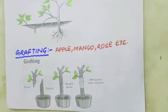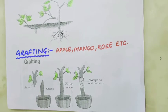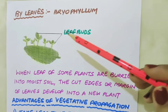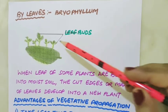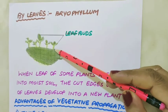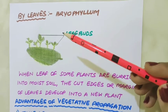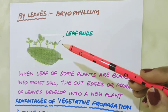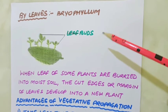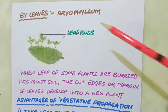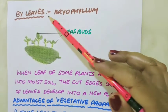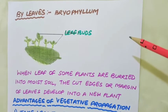Vegetative propagation can also be done with the help of leaves. When the leaves of some plants are buried in moist soil, the cut edges or margins of the leaves develop into new plants that resemble the parent. For example, vegetative propagation by leaves takes place in bryophyllum.